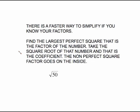Now there is a faster way to simplify these square roots if you know your factors. If you're pretty good with your basic times tables, then this is another option and it is a faster option. What you want to do is look at the number and find the largest perfect square that's a factor of this number. Then you're going to take the square root of that number and that becomes the coefficient, meaning the number on the outside. The non-perfect square factor stays on the inside.